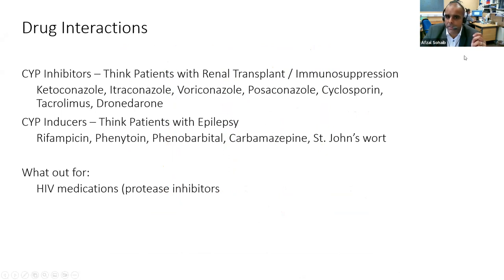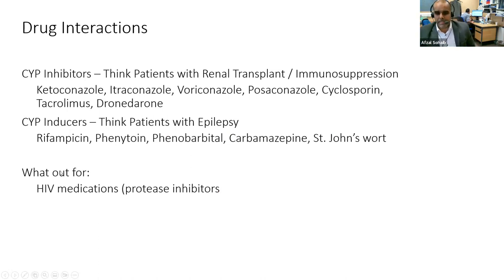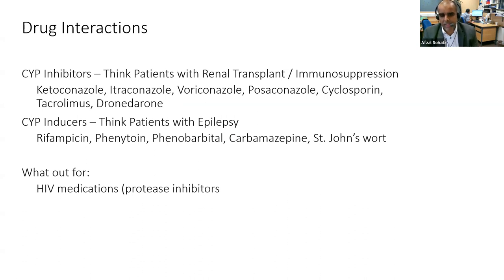Drug interactions involve CYP inhibitors and inducers. Inhibitors — think patients with renal transplant on ciclosporin or tacrolimus, or on antifungals for infections. Inducers — think patients with epilepsy on carbamazepine or phenytoin, and also rifampicin and St John's Wort. Also look out for HIV medications. When a patient doesn't have any of these drugs, you can make the initiation decision quite quickly. If they do have these, take a step back, review the drug history, chat with your practice pharmacist, or refer to anticoagulation clinic if it's complex.